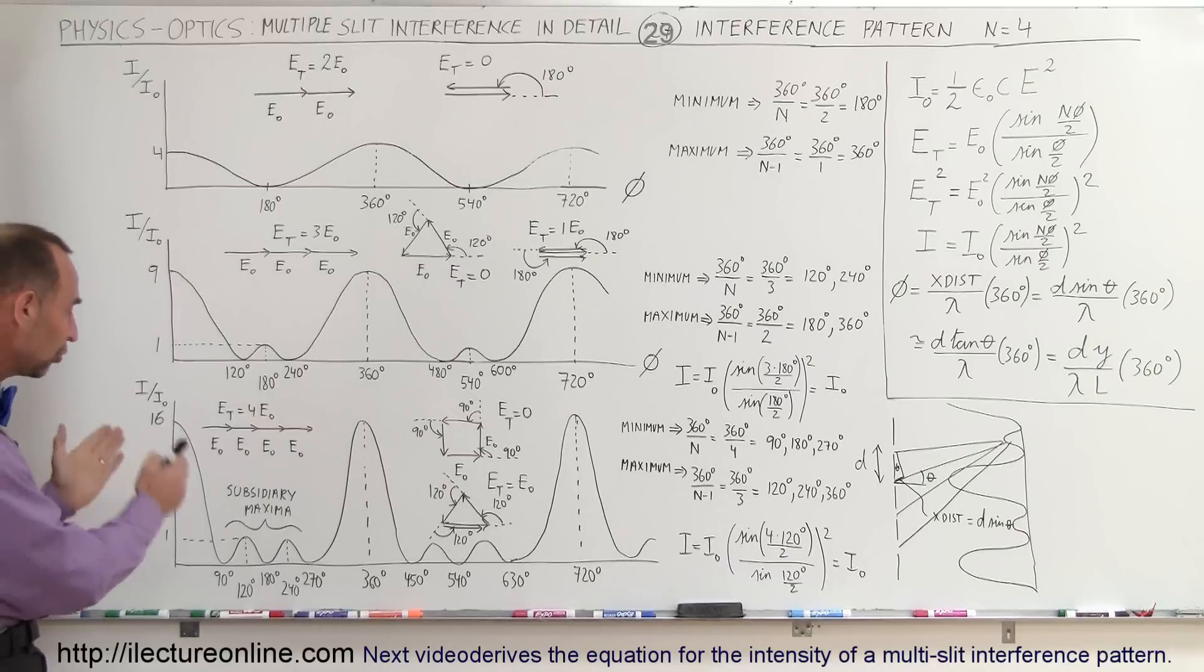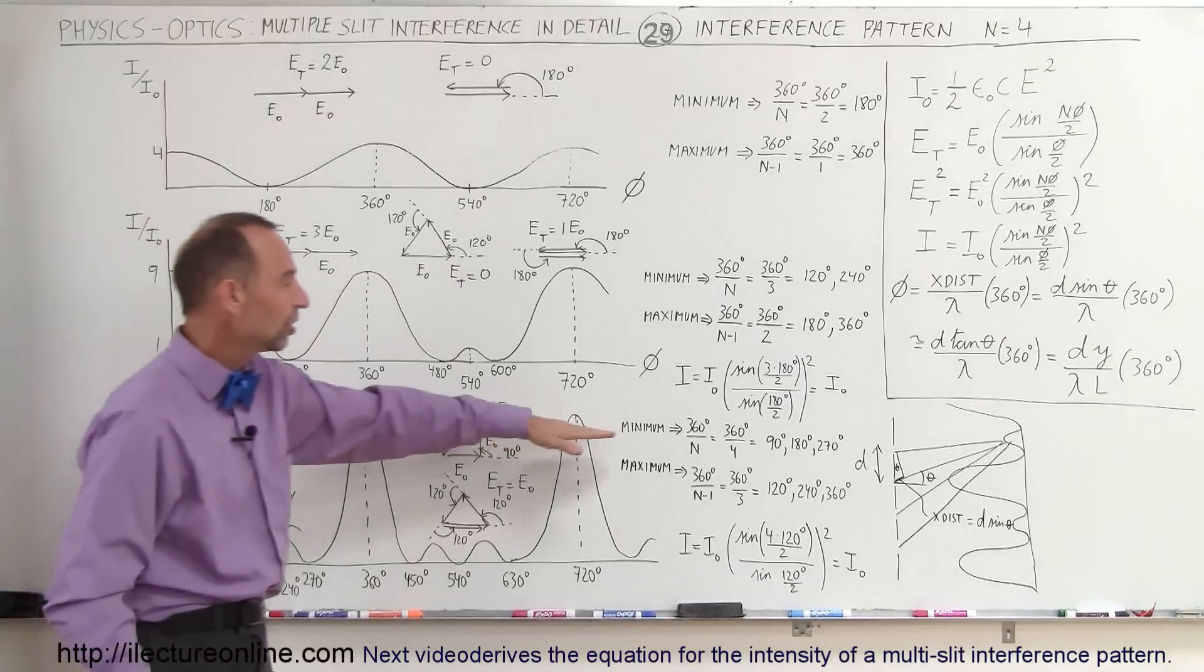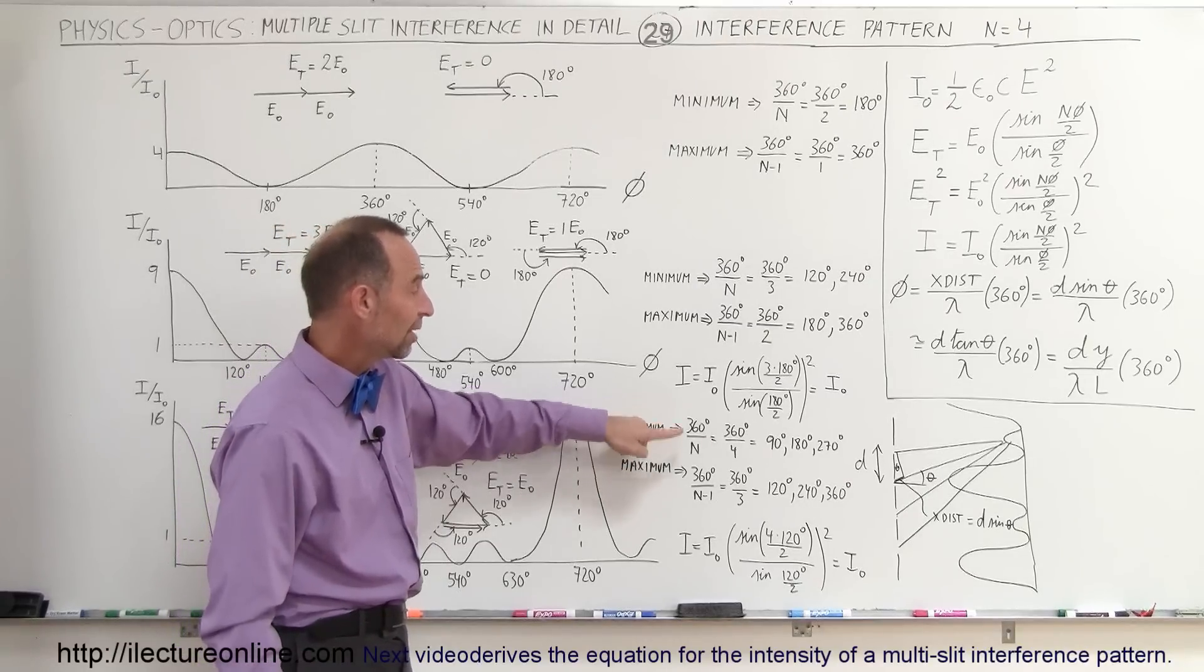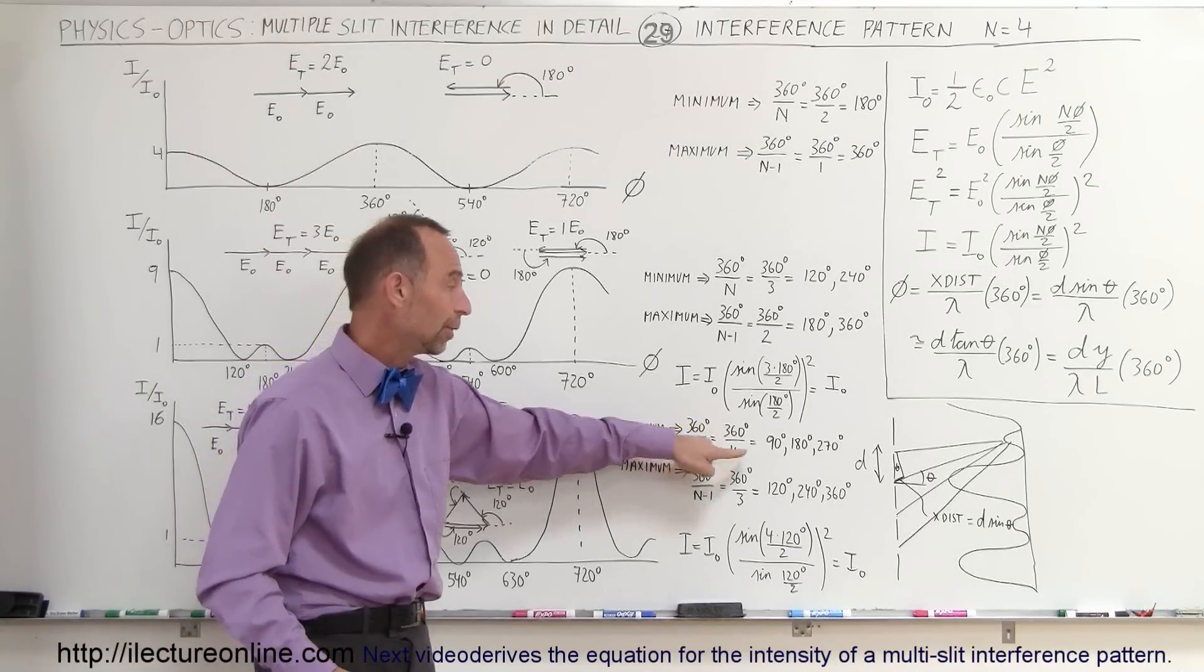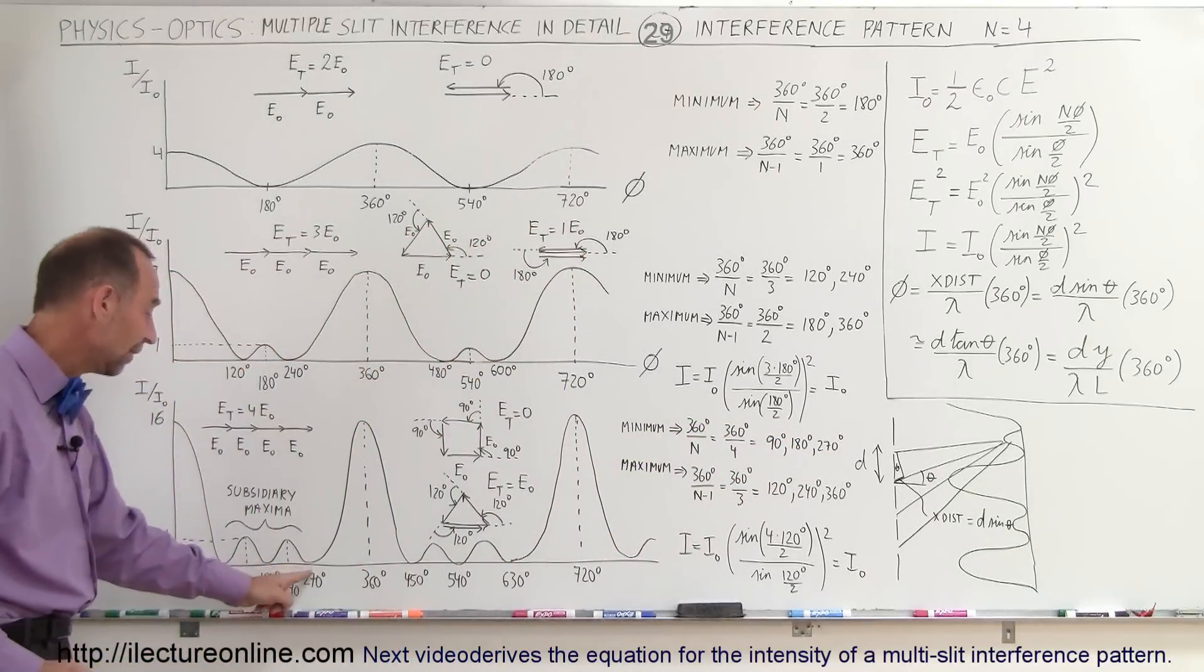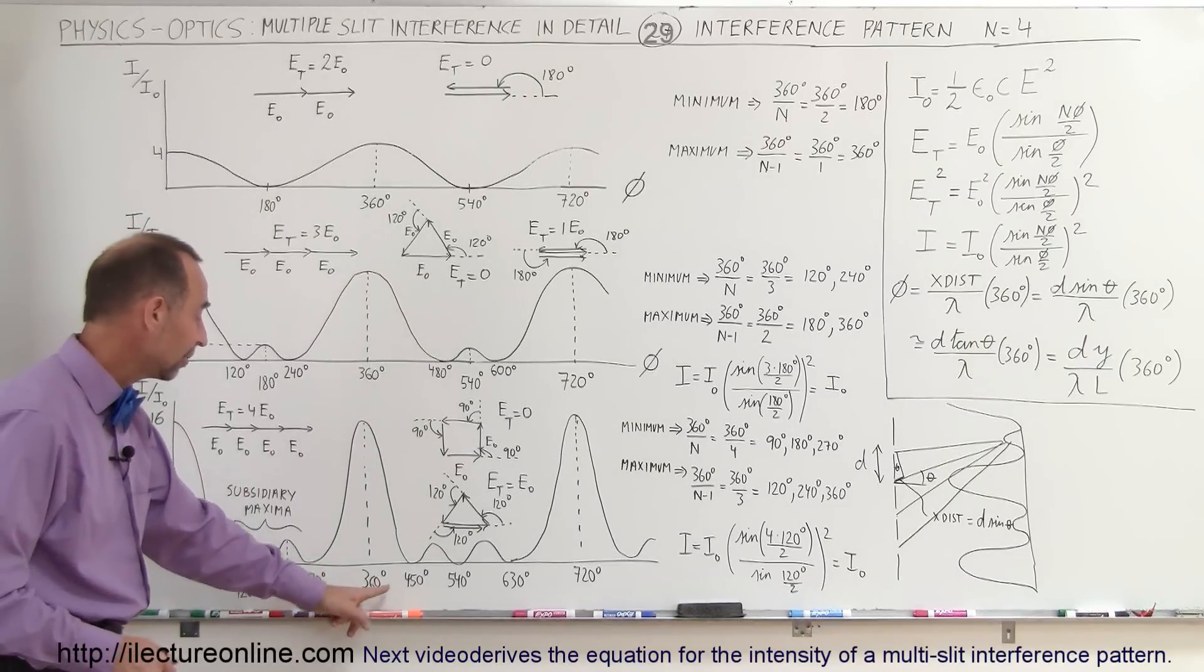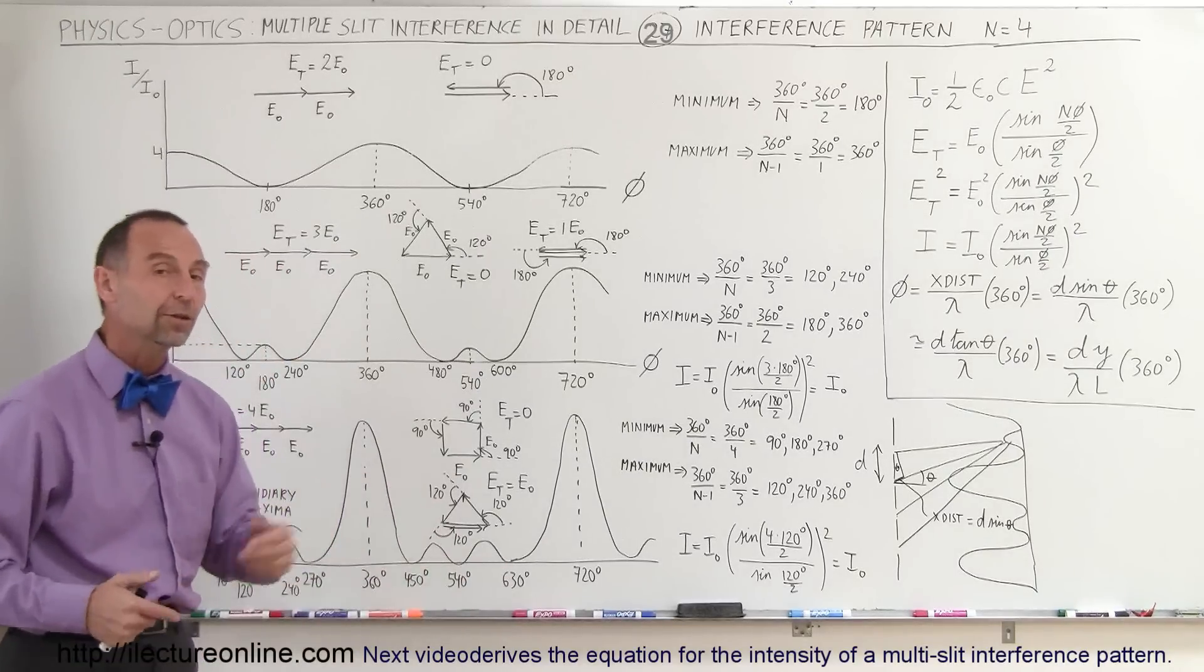Now we can figure out where to draw these subsidiary phasors and where to draw the minima by again using this principle. The minimum can be found when you take 360 degrees divided by the number of slits. In this case 360 divided by 4 is 90, so we find a minimum at 90, 180, and 270. So notice, at 90, 180, and 270, we find a minimum, and then add it to 360: 360 plus 90, 360 plus 180, 360 plus 270, we find another minimum right there.